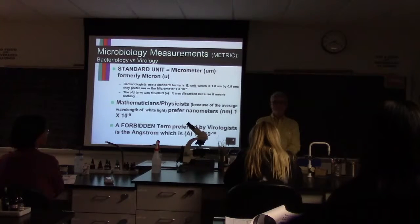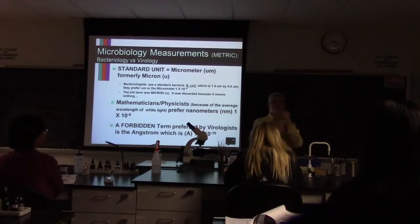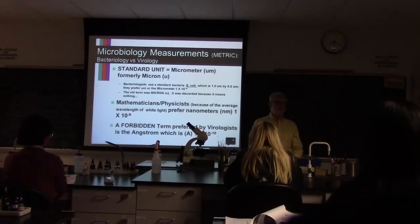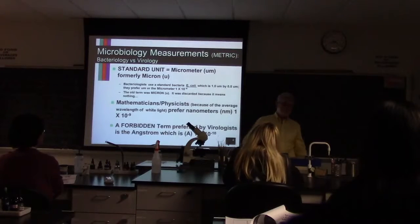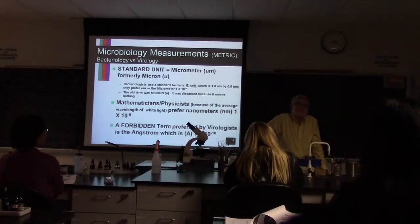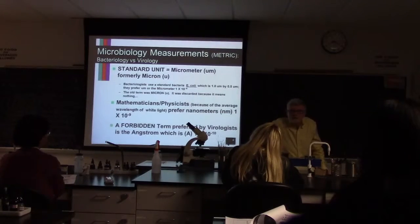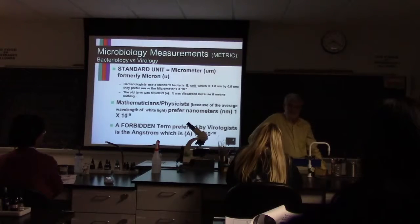Now visualize a Volkswagen Beetle. Good. Now I'm going to give you a number: zero point zero zero zero zero zero zero one meter. You can't do it, can you? Nobody can. If you tell someone it's a millionth of a meter, people get an idea — they know what a meter is and they know what a millionth is. But 10 to the minus 10 meter? No one has a clue except a virologist.